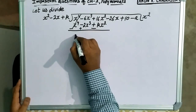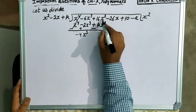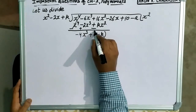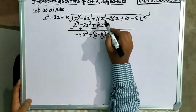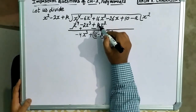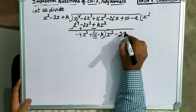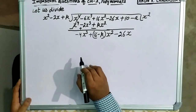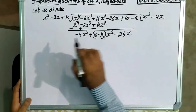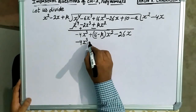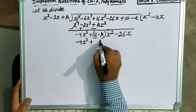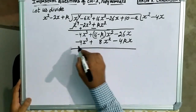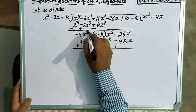minus 6 plus 2, यह बनेगा minus 4x cube. यहाँ पर x square common आएगा — 16 minus k bracket के अंदर रहेगा. उपर से minus 26x को नीचे लेकर आएंगे. यहाँ पर minus 4x cube है, तो minus 4x से multiply करना पड़ेगा: minus 4x cube, plus 8x square, minus 4kx. Sign बदले जाएंगे, तो यह cancel out हो गया.